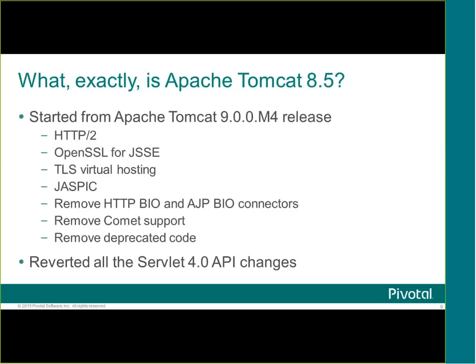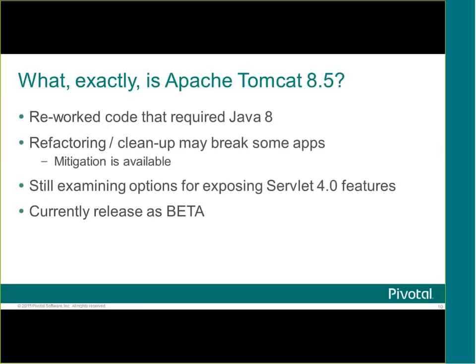We took Milestone 4 and copied it to create a starting point for 8.5. We then reverted all of the Servlet 4.0 API changes, so the specification APIs in Tomcat 8.5 are identical to those in Tomcat 8. If all your app does is use the specification APIs and you don't use any custom Tomcat components, then if it works on 8, it'll work on 8.5. Also, because Tomcat 9's minimum Java version was Java 8 and we used some Java 8 specific features, we had to rework that code since 8.5 needs to run on Java 7.